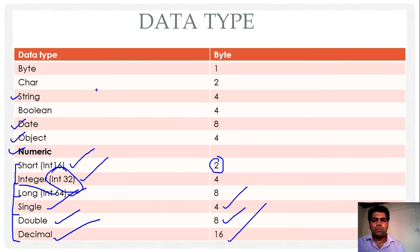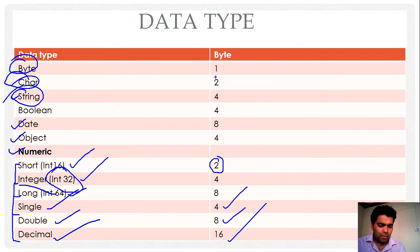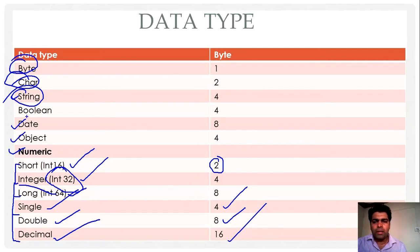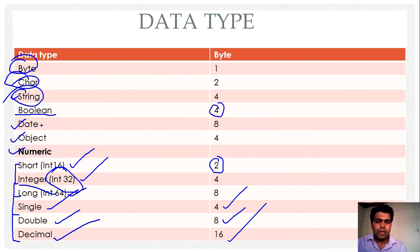To store a character, we have a character data type and a string data type, taking sizes of correspondingly 1, 2, and 4 bytes. There is also a boolean data type to store true or false, which takes 4 bytes in memory. There is a date type to store current date and time, which takes 8 bytes of storage space.